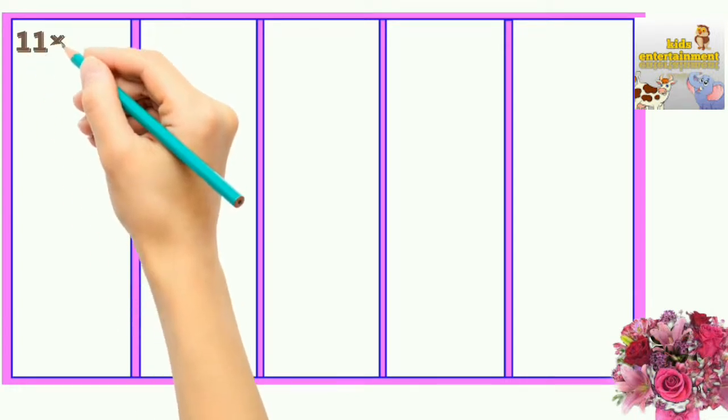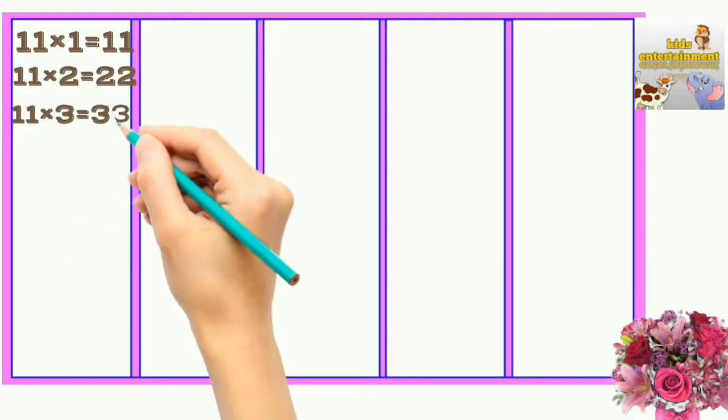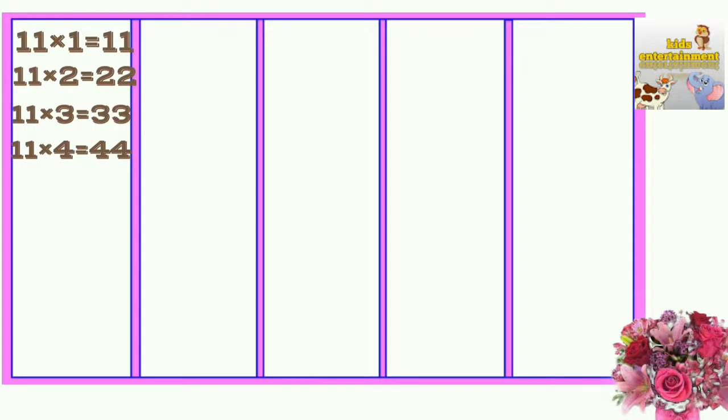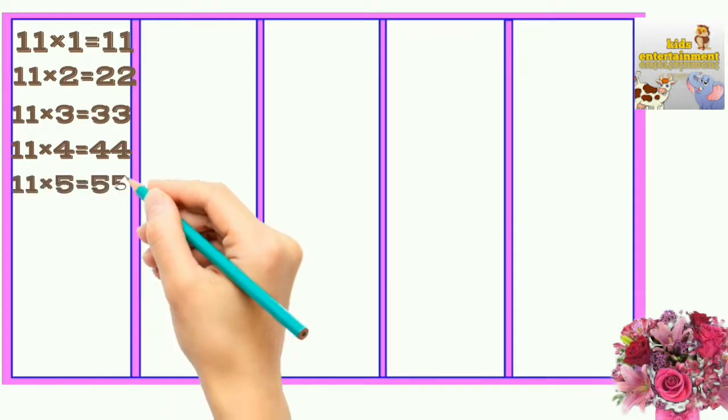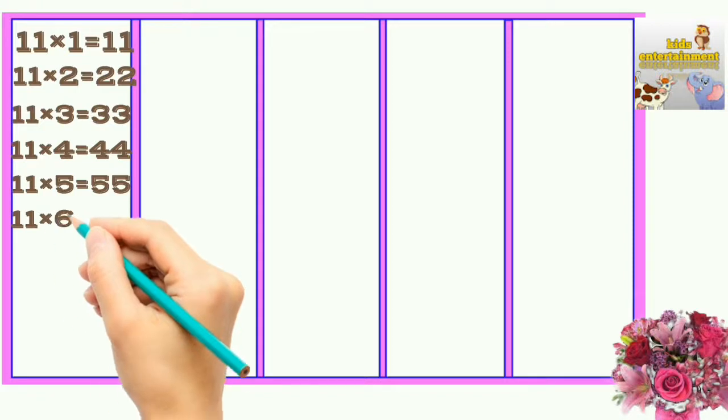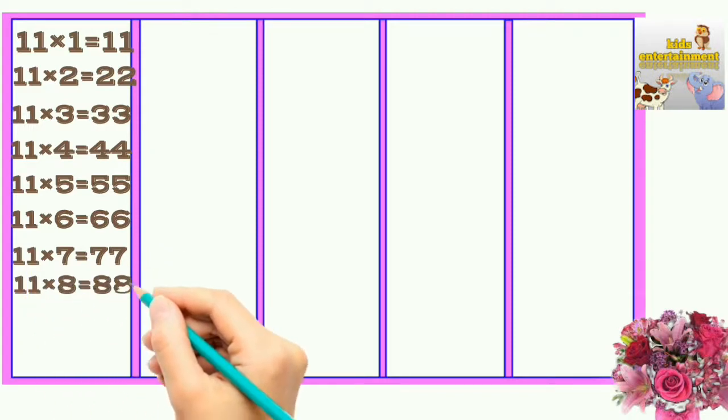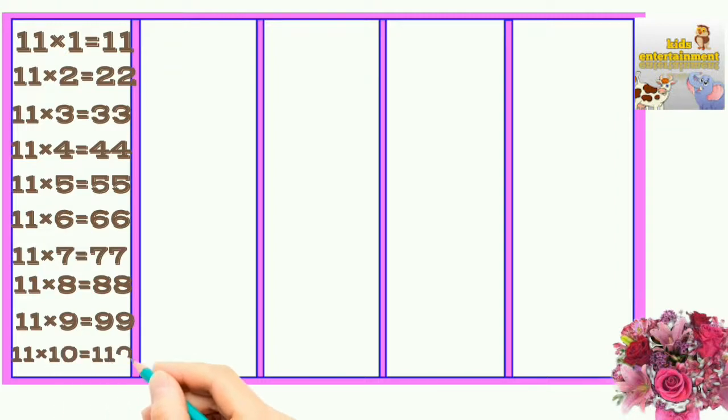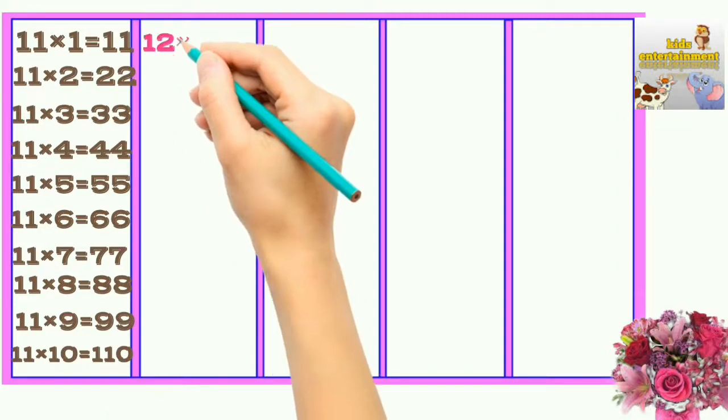11×1=11, 11×2=22, 11×3=33, 11×4=44, 11×5=55, 11×6=66, 11×7=77, 11×8=88, 11×9=99, 11×10=110. 12×1=12.